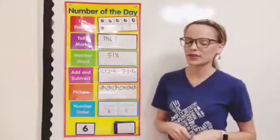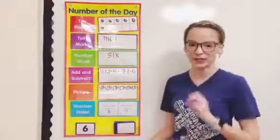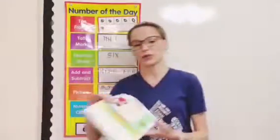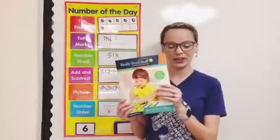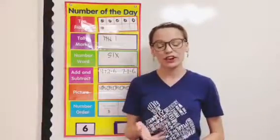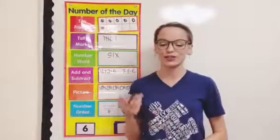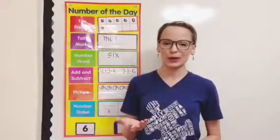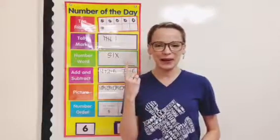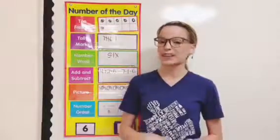So if you want to grab this resource for your classroom, you have three different ways you can do it. You can grab it through the Really Good Stuff Special Needs Catalog. You can go to reallygoodstuff.com/specialneeds and search for the number of the day space saver pocket chart, or you can click the link above and purchase it that way until next time.